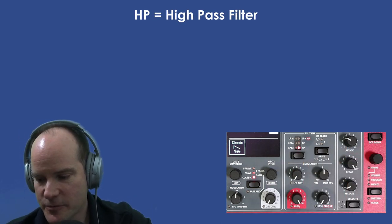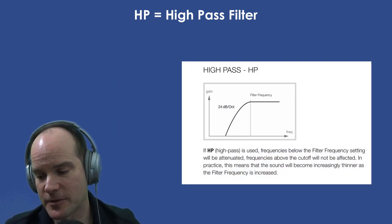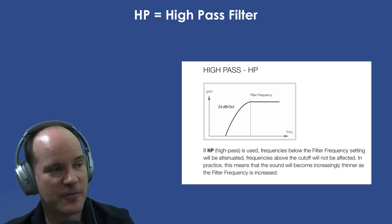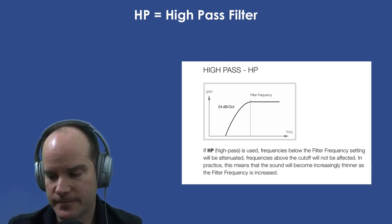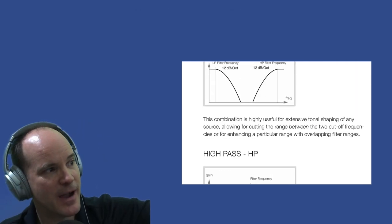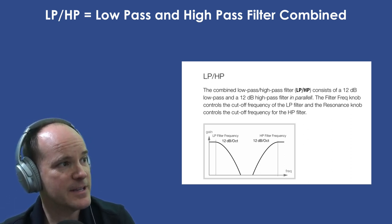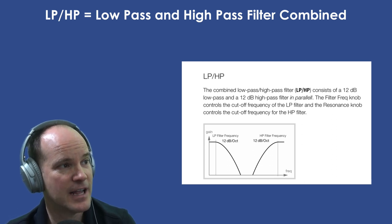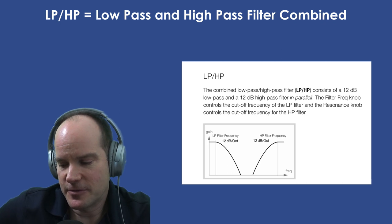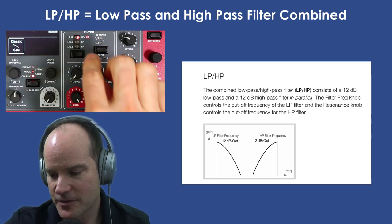The high-pass filter we already touched on — it's the opposite of low-pass, except the high-pass filter runs at 24 dB per octave, similar to the LP24. Moving that cutoff removes the low-frequency portion. Now the LP+HP combined: it consists of a 12 dB low-pass and a 12 dB high-pass filter in parallel. The filter frequency knob controls the LP cutoff, and the resonance knob controls the cutoff frequency of the high-pass filter in this configuration.